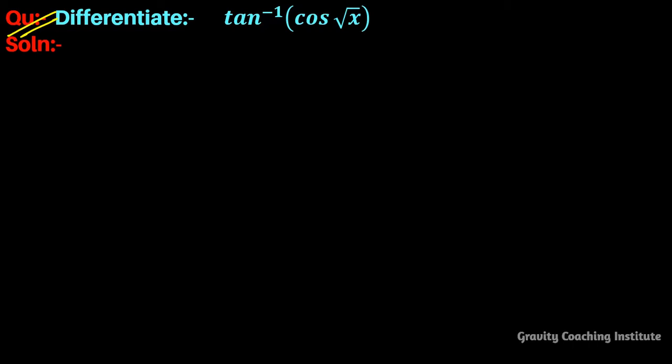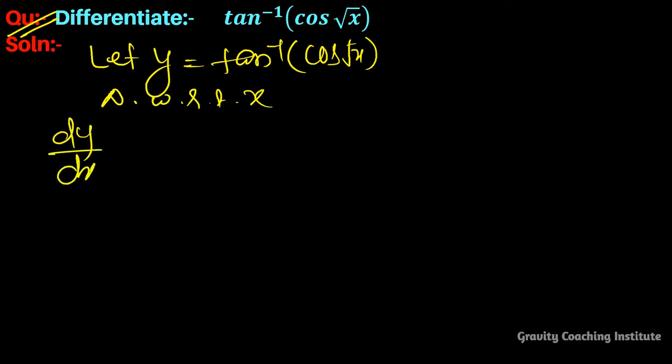Question: Differentiate tan inverse cos root x. Let y equal to tan inverse cos root x. Differentiate with respect to x, so dy upon dx equals the derivative of tan inverse cos root x.